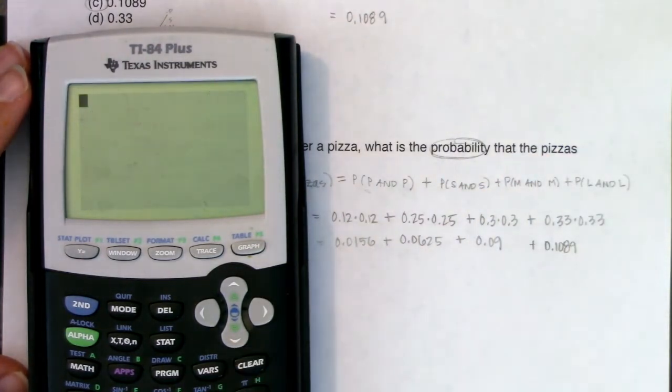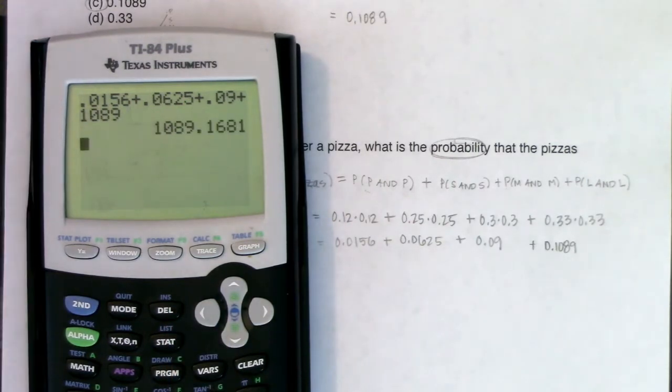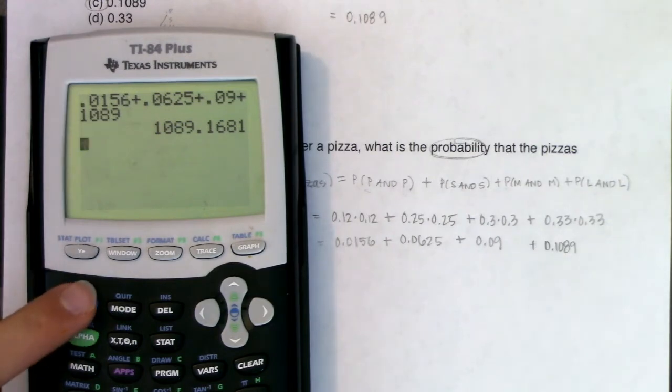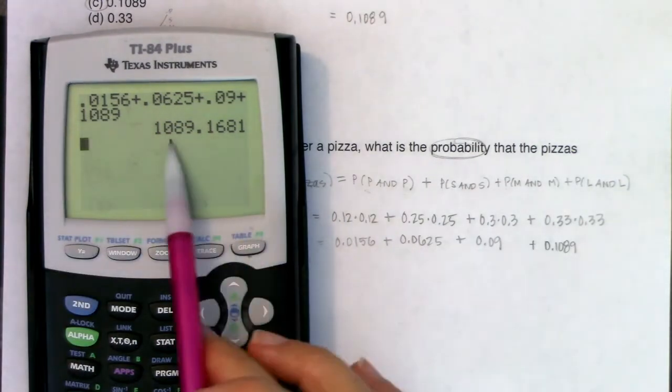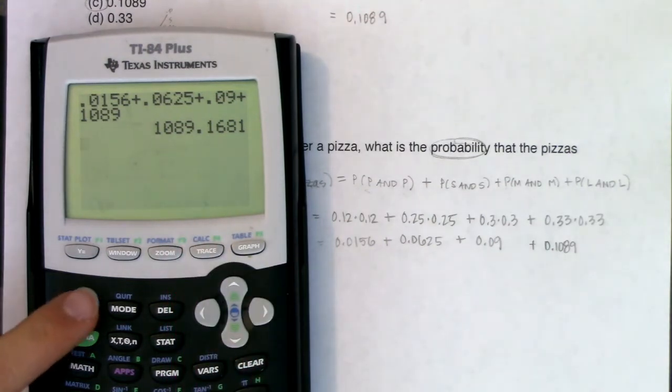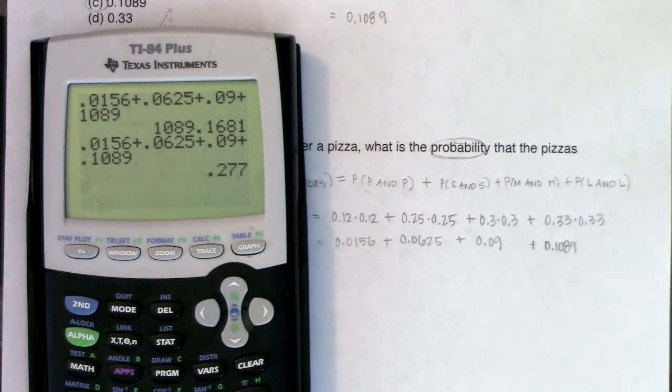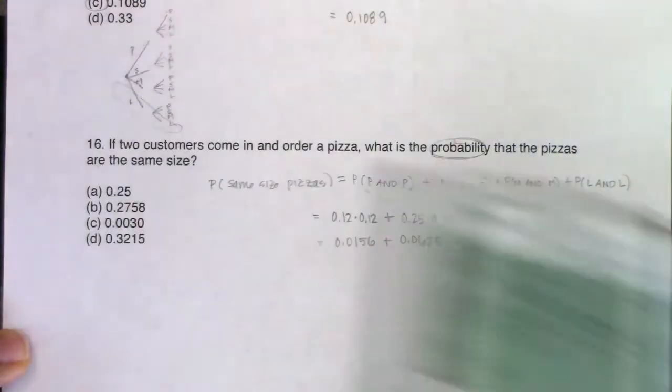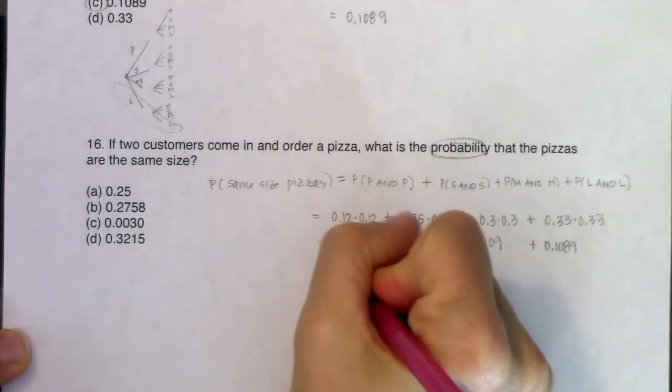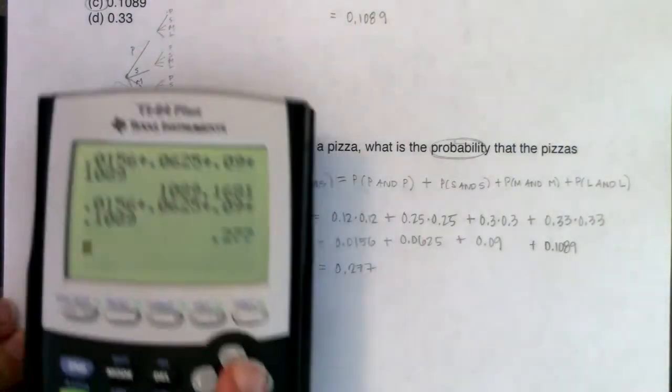Now let me add the disjoint branches. I'll clear this out: 0.0156, 0.0625, 0.09, and 0.1089. Oops, oh what did I do—I left a decimal place off. The reason I know my answer can't be correct is because you have to get a number between 0 and 1. All probabilities are numbers between 0 and 1, so I know I made a typo. Let me put that back in, and now I'm looking at about 0.277. Let's see what we got: I see 0.277, this is 0.2758. Maybe I had another typo in there—did anyone notice it? Let's go back and check.